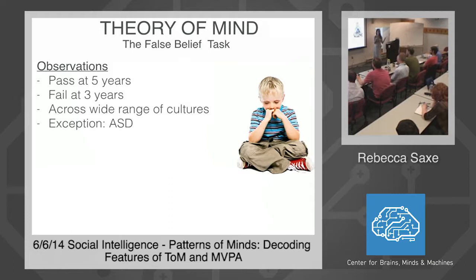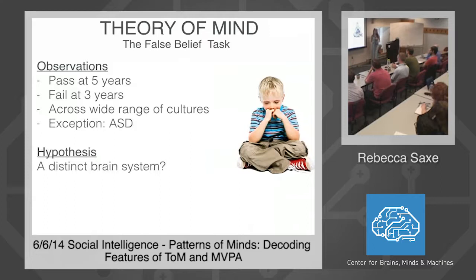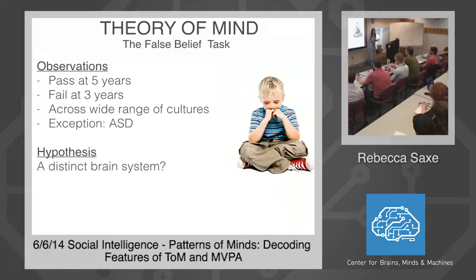Relative to their own IQ and other cognitive abilities, kids with autism struggle disproportionately when the task requires thinking about other people. They failed this task way out of proportion to their ability to do other logical reasoning tasks, even ones that match difficulty. That set of observations — from as early as the 1980s — led to the hypothesis that there might be a distinct brain system involved, supporting this capacity in typical function. Anything that develops relatively universally and can be disproportionately affected by a neurodevelopmental disease might be supported by a distinct mechanism. Since this capacity is unique to humans, it could only be studied noninvasively, which became possible with the advent of neuroimaging.